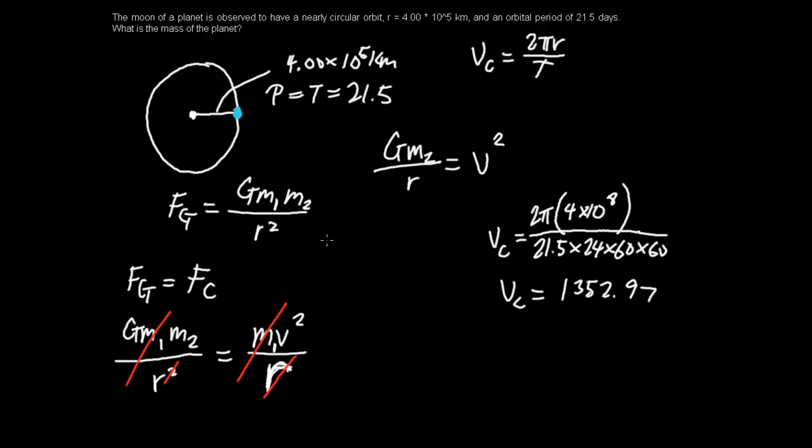We've got G, which is, you should always know that G is 6.67 times 10 to the negative 11, times m2 over 4 times 10 to the 8th equals, I have no more space, this squared.